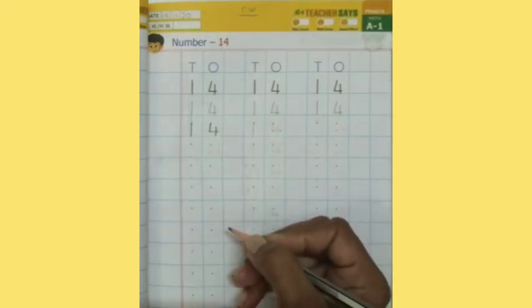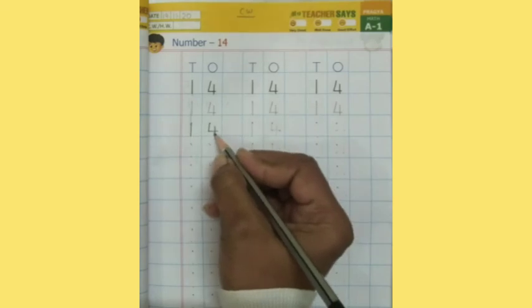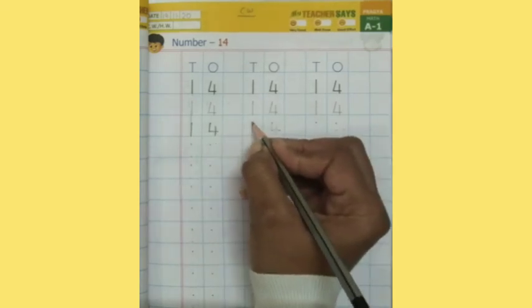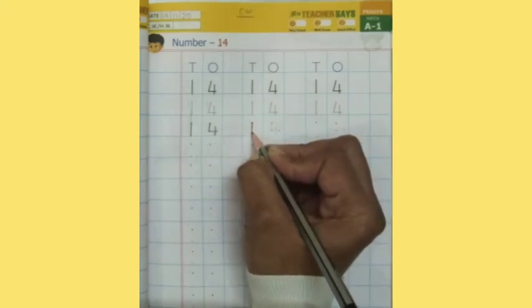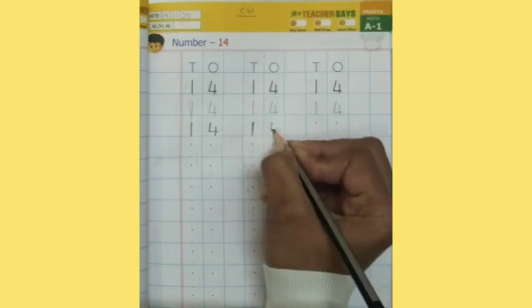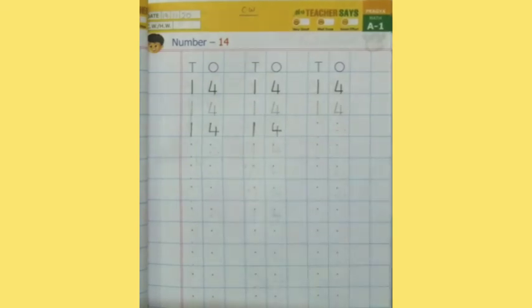This is number 4. 1, 4, 14. Again see, 1, 4. 1, 4, 14.